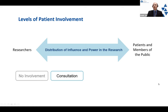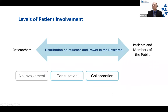But once we start involving patients and members of the public, we can give over different levels of control. At the lowest level, we can consult patients — this might be a discussion group where I, as a researcher, run my research idea by a group of patients to see what their feedback would be. At the next greater level, we can involve patients in a collaborative manner, so patients actually take over activities as part of the research process. This could include preparation of study materials, conducting data collections such as interviews, or supporting the analysis of research data.